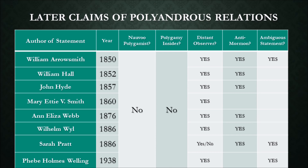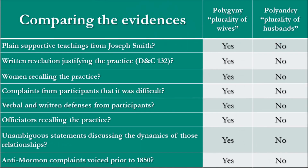Many of the statements are ambiguous. If we compare the evidences supporting polygyny to those supporting polyandry, what do we find? Supporting polygyny are plain supportive teachings, a written revelation, women recalling the practice, complaints from participants that it was difficult, defenses of the practice, officiators recalling the marriages, unambiguous references, and anti-Mormon accusations in Nauvoo. None of these exist for polyandry.